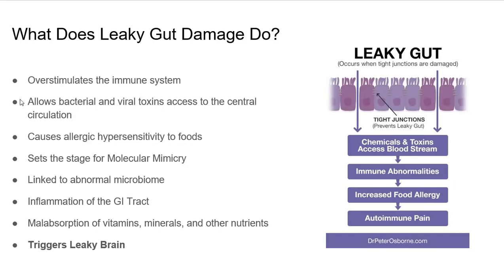This allows bacterial and viral toxins to access the central circulation. It also activates and creates acquired allergies to food, so people start to become more allergic to the foods that they're eating, also stimulating more inflammation. But it also does something called molecular mimicry. It sets the stage. Once you have a leaky gut, the molecules from the food and the bacteria and the viruses and other things that come through your GI tract—